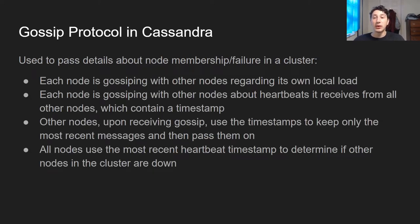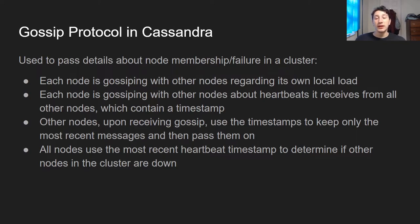So why is this useful in Cassandra? Basically it's used to pass details about node membership and failure in a cluster. Each node is gossiping with the other nodes regarding its own load — saying here's my local state, this is how I'm doing in terms of how many writes I'm taking in, and if I'm looking like I'm going to crash soon. Each node is also receiving heartbeats from other nodes incrementally via this gossip protocol and saying, okay, I've received a heartbeat, here's the timestamp of the heartbeat that I received. Keep in mind, though, that server timestamps are not always coordinated, so that can be problematic in terms of ordering the messages.